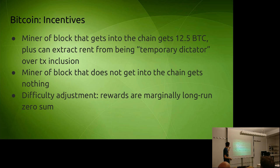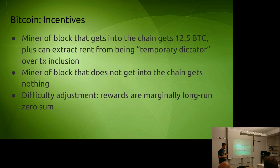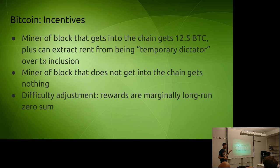If you create a block and the block does not get into the chain, you get nothing. There's also a difficulty adjustment property that basically says rewards are marginally in the long run zero-sum. No matter what people do, the total sum of everyone's revenues is going to end up being roughly the same. This is one of the main reasons why Bitcoin has selfish mining profits.